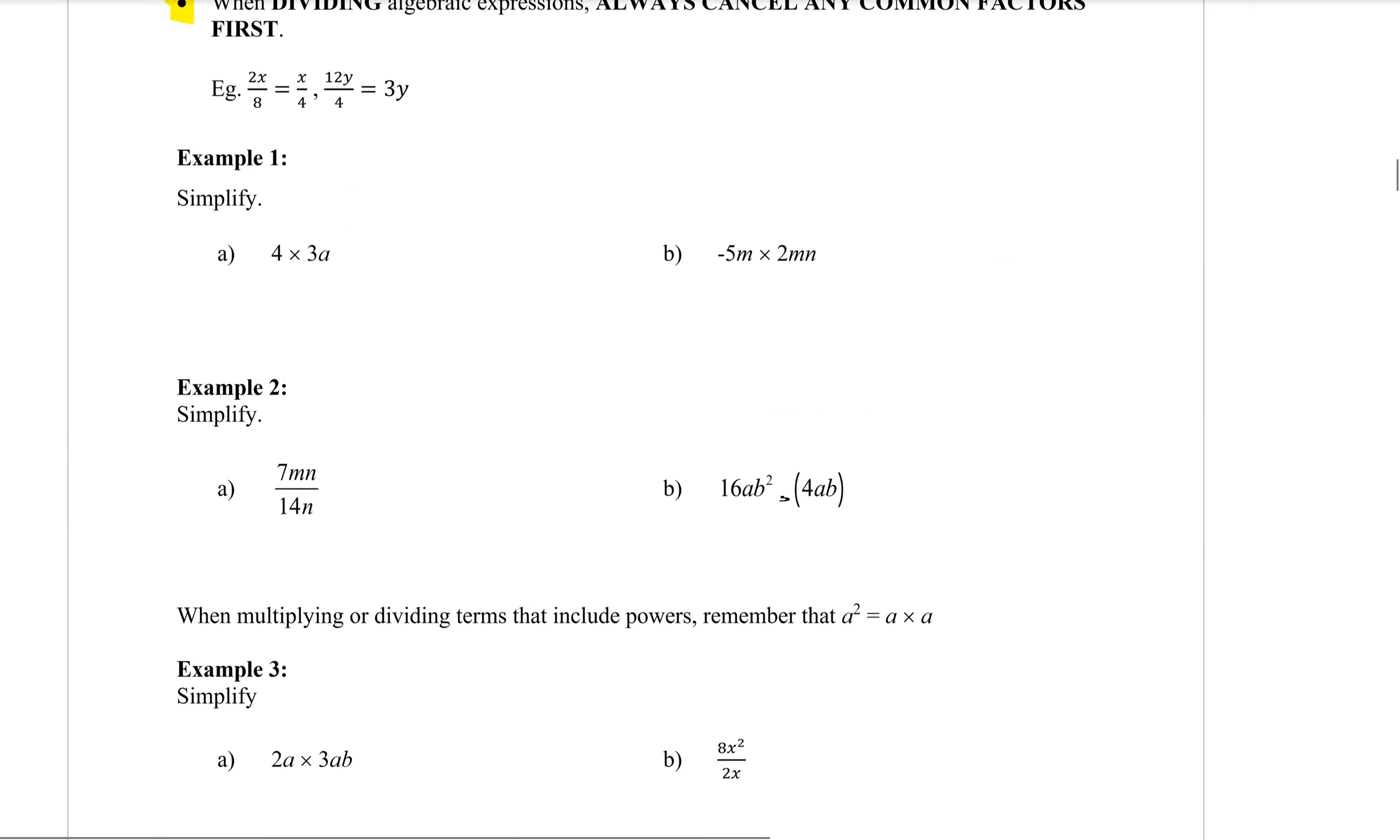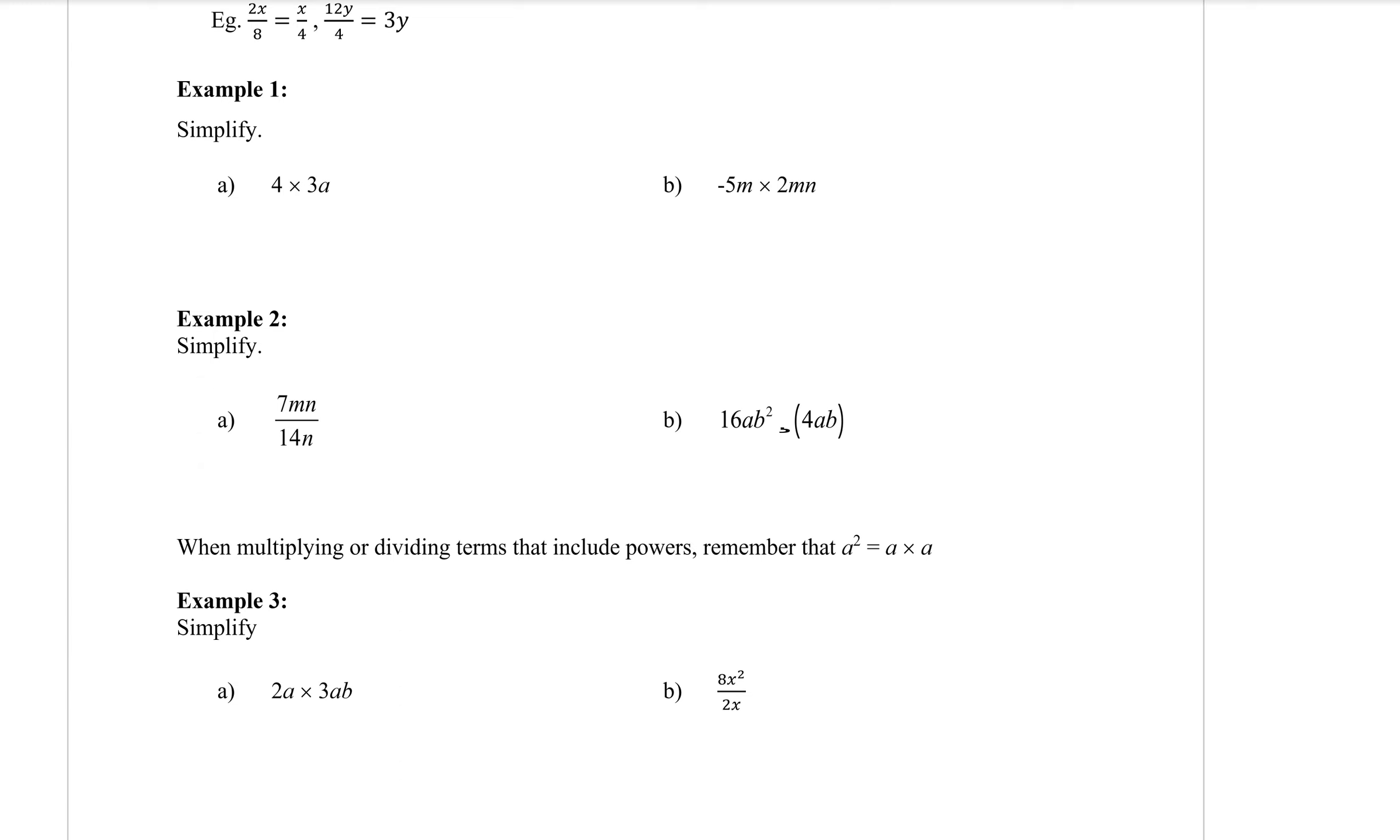Example 1, simplify. You can see there are multiplication signs in here. We're multiplying. That means we want to multiply the numbers. So I have 4 times 3, which is 12. And any letters collect up afterwards. There's only an A, so it's 12A.